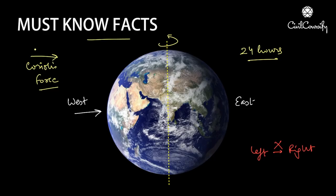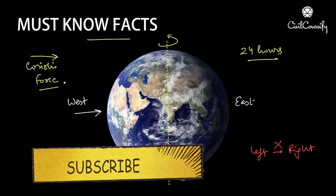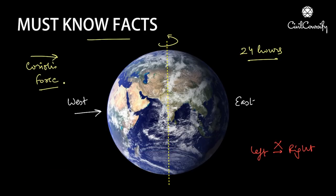This Coriolis force is very small compared to other forces of daily occurrence and can only be noticed for large displacements of large bodies — for example clouds, air masses, water in the ocean, etc. One more important thing: the Coriolis force on the equator is zero and at the poles it is maximum.